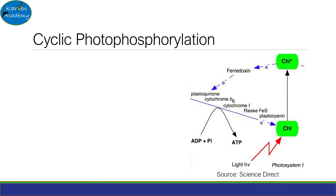Plants have another process of making ATP, and this is called cyclic photophosphorylation. As the word suggests, it involves making ATP using light, and this is a cyclical process. This process only occurs in Photosystem 1.